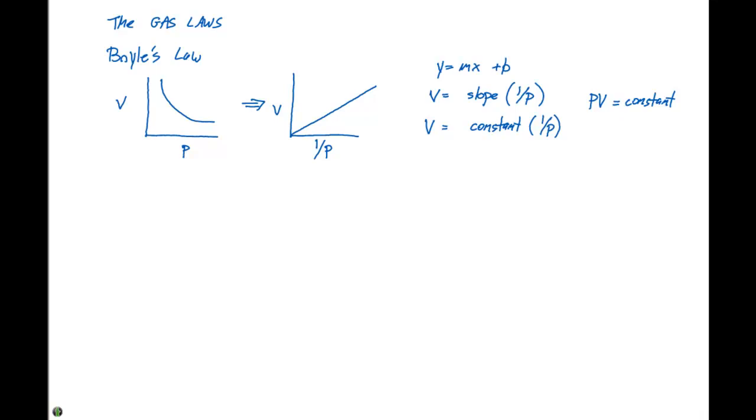After Boyle did his laws, there was someone by the name of Charles who came up with Charles' Law. In 1787, Jacques Charles found that the volume of a gas at a constant pressure is going to increase linearly with temperature.